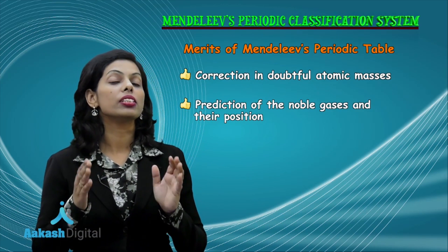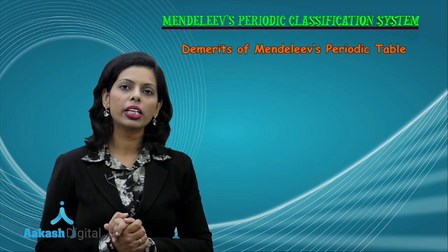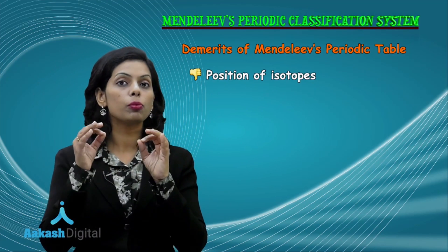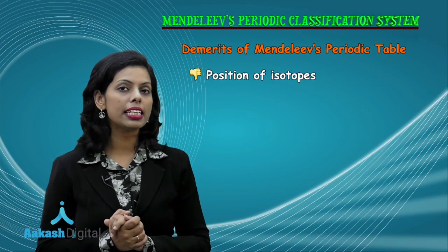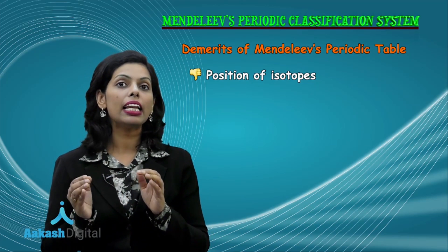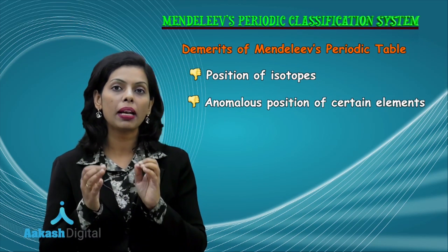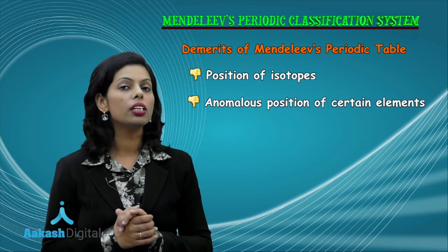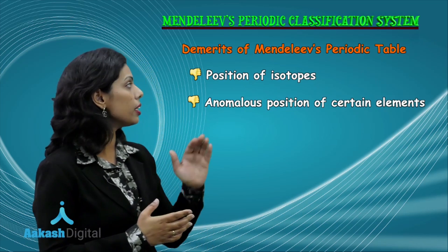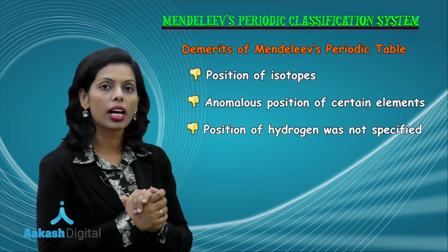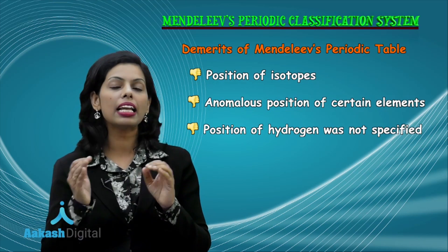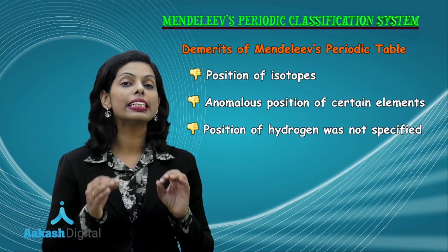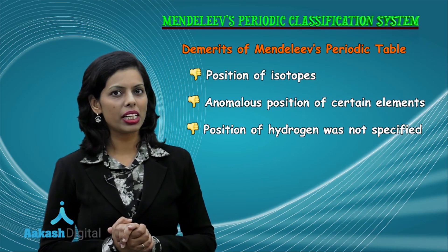After that, there was the turn for the demerits of Mendeleev's periodic classification system. The first limitation was that the position of isotopes was not specified in this table. Also, certain elements with lower atomic masses were placed before elements with higher atomic masses, which was a limitation. Another limitation was that there was no specific position for hydrogen, as it has similarity with both alkali metals and halogens, but its position was not specified.